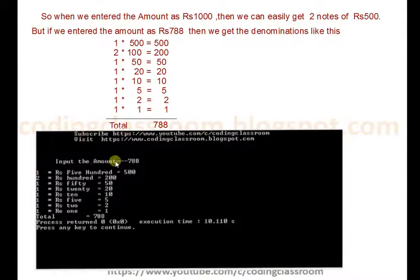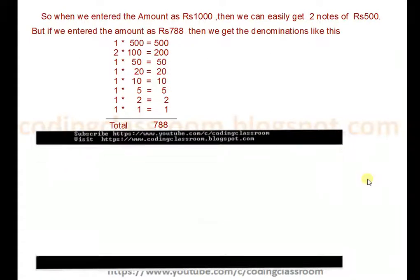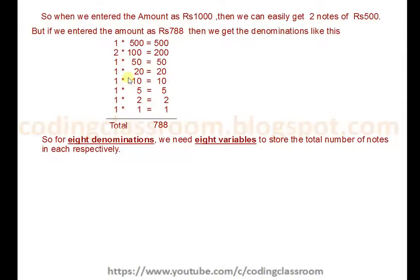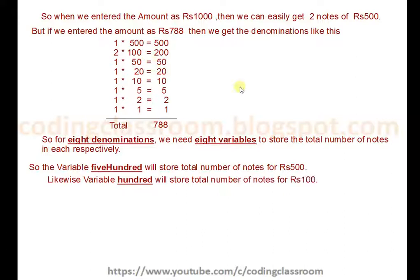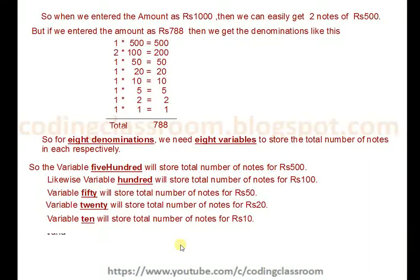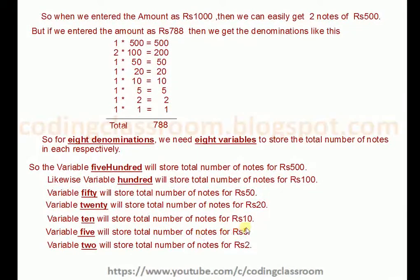For eight denominations we need eight variables so that we can store the total number of notes in each of these eight variables respectively. For the variable 500, we store the total number of notes for rupees 500. For 100 we use variable 100, for 50 we use variable 50, for 20 we use variable 20, for 10 we use variable 10, for rupees 5 we use variable 5, for rupees 2 we use variable 2, and for rupees 1 we use variable 1.